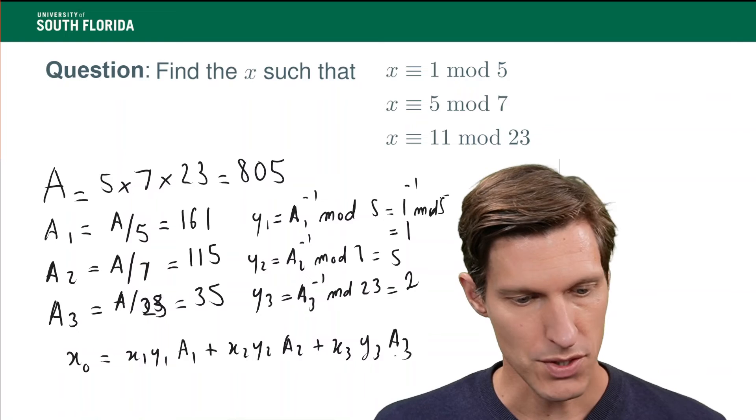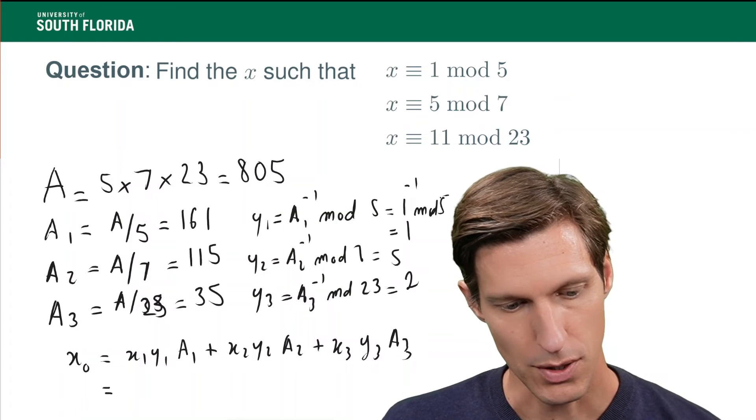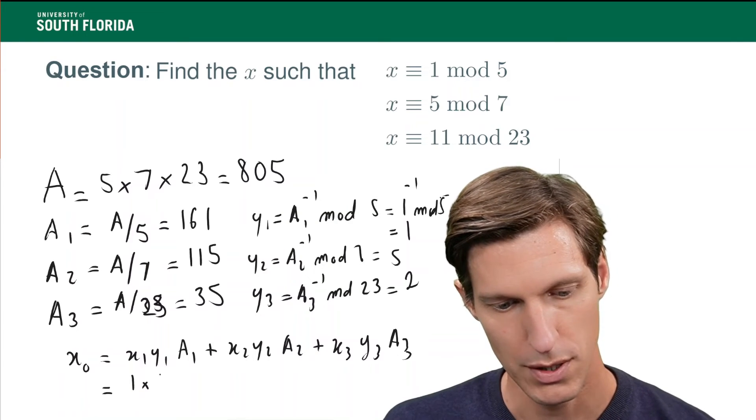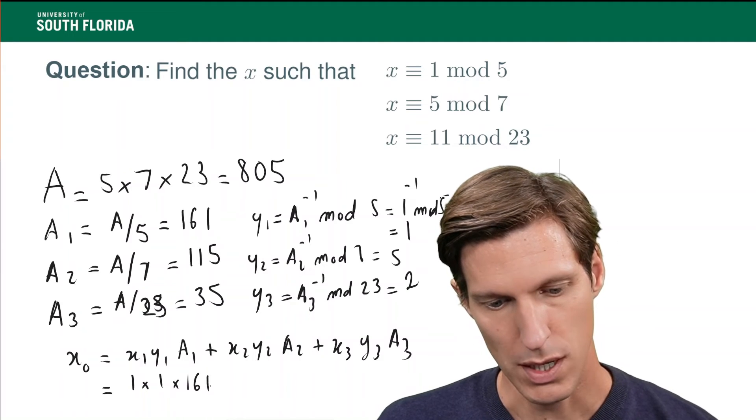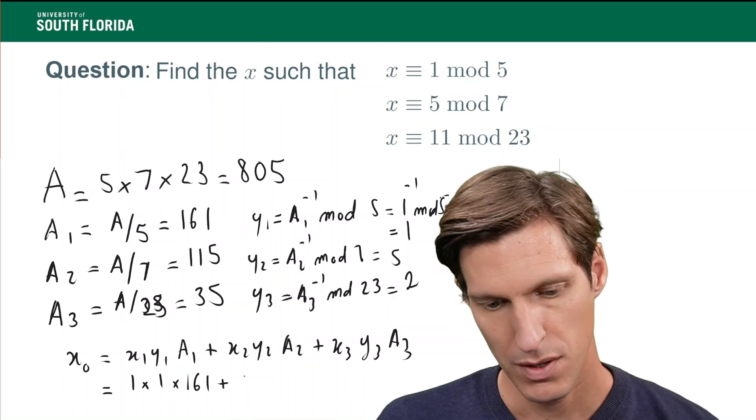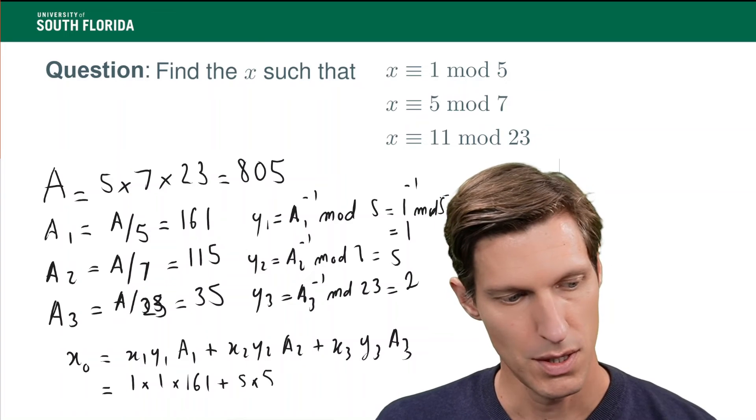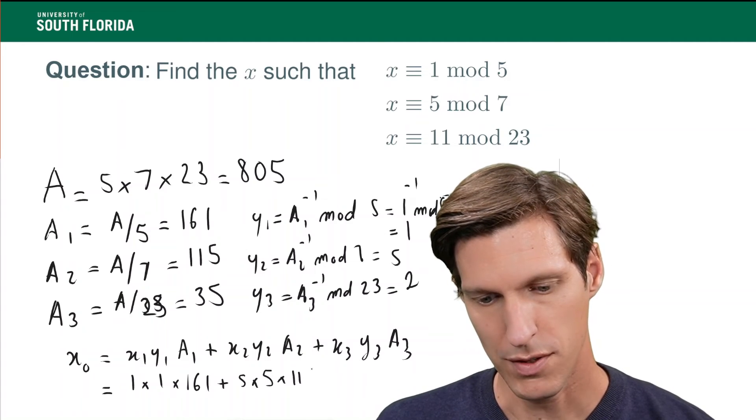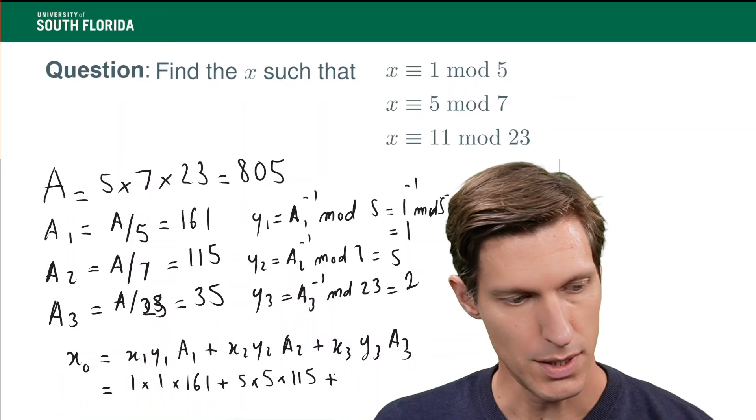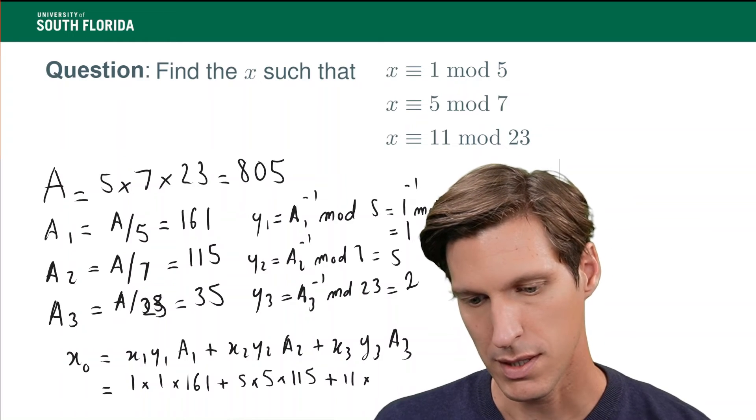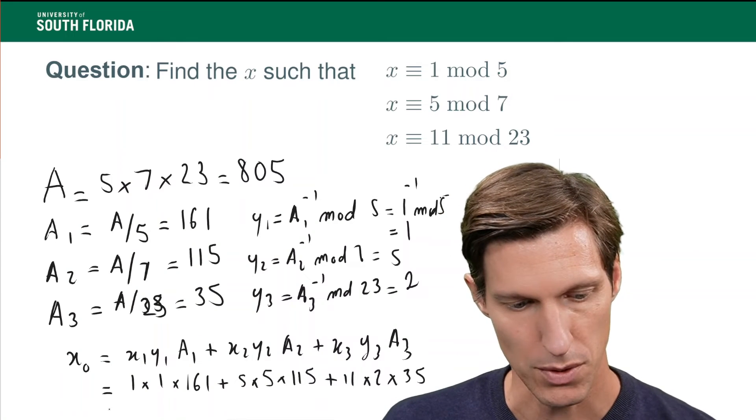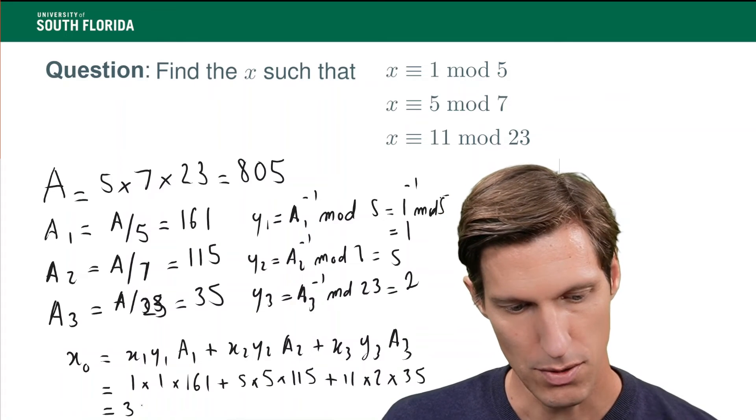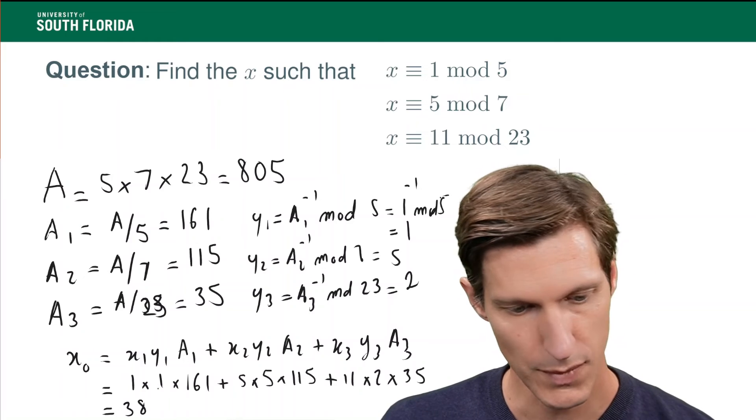So, all I have to do now is substitute with the right values, and that will give me one particular solution. So, 1 times 1 times 161 plus 5 times 5 times 115 plus 11 times 2 times 35. And that number is 3,806.